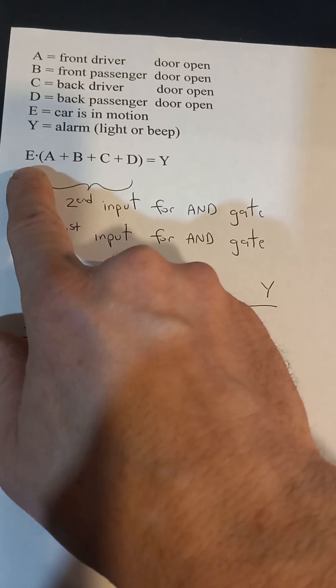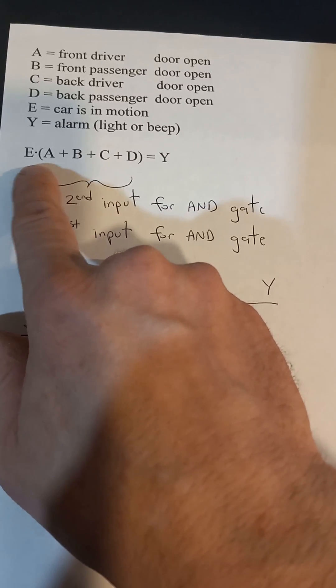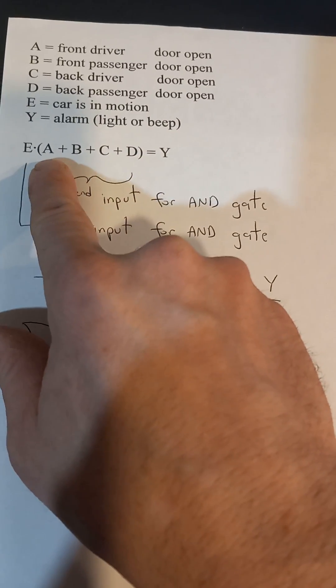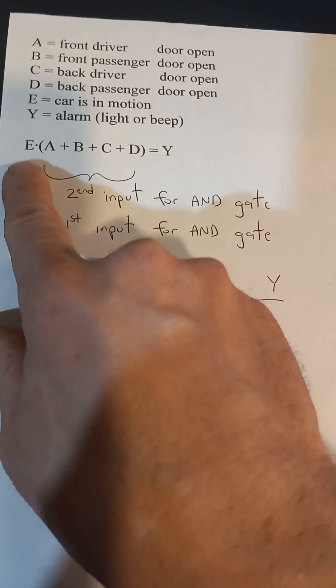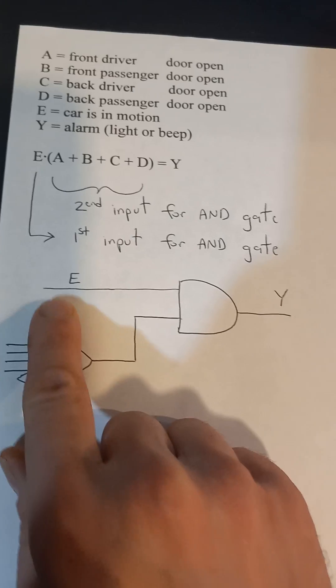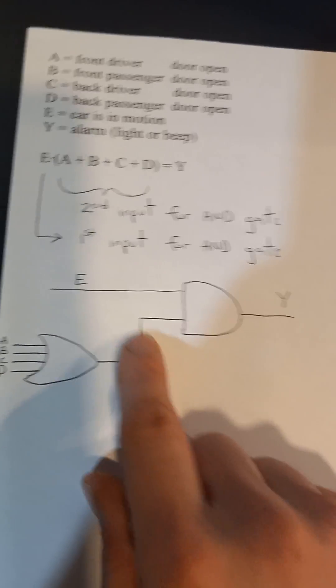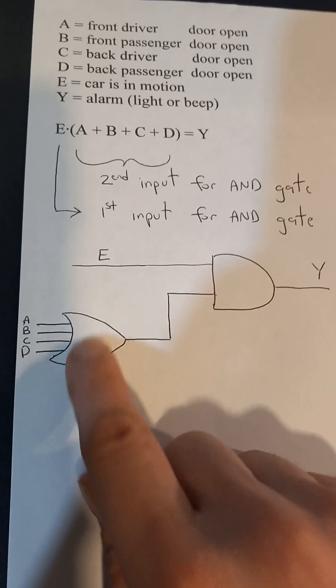So, E is your car's in motion, and OR one of the doors are open. So, you write it like this. Your E would be your first input for your AND gate, and your second input would be if one of your doors is open.